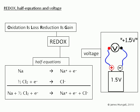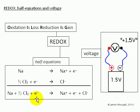So, assumed knowledge: redox, half equations, and voltage. Redox reactions are where one species is oxidized and one is reduced. We can say that oxidation is loss of electrons and reduction is gain of electrons. We can write half equations which involve electrons. For example, here we have sodium losing an electron and chlorine gaining an electron. The two half equations can then be combined to cancel out the electrons and give a balanced equation.